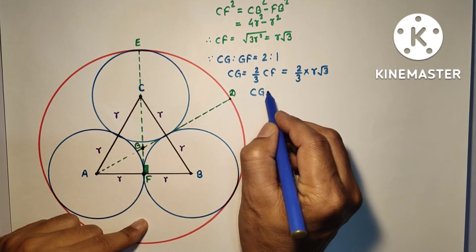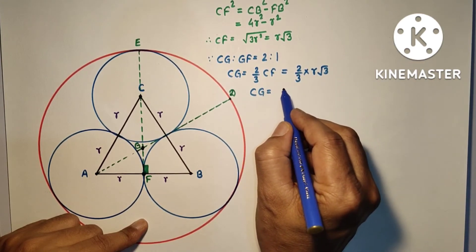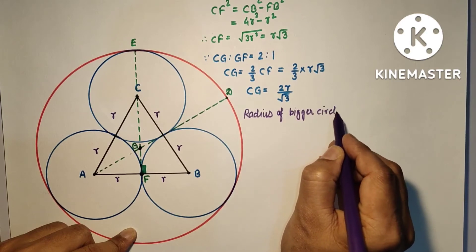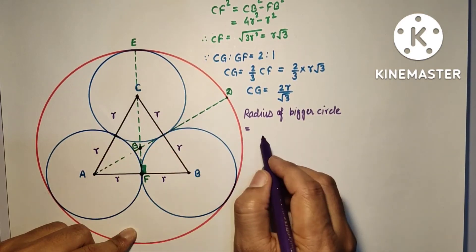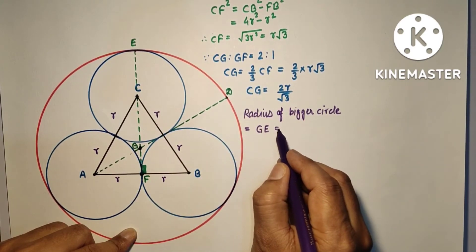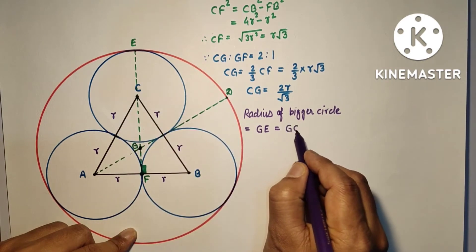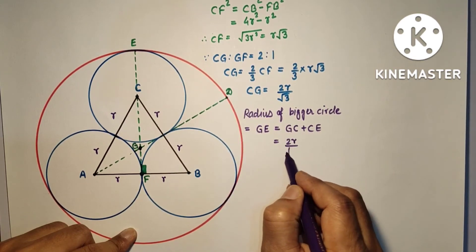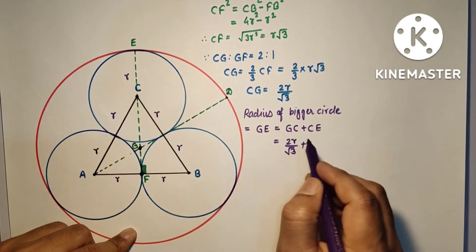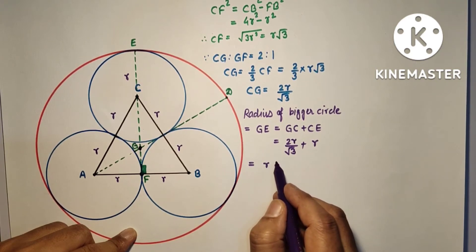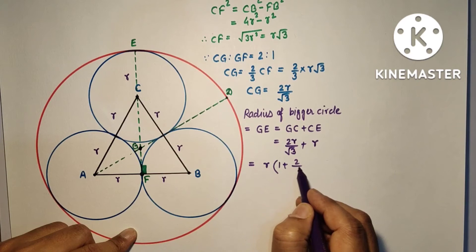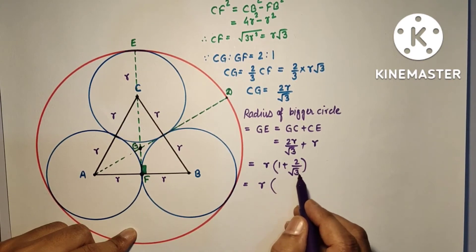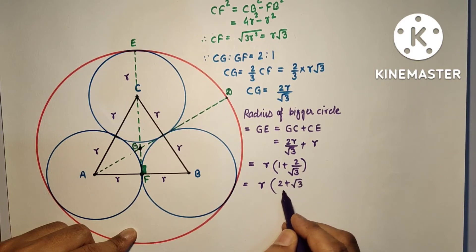Radius of that is equal to GE, which is GD, and that is GC plus CE. GC, which is CG, is 2R/√3, and CE is nothing but R. If we take R common, 1 plus 2/√3, that means R(√3 + 2)/√3, or we can say (2 + √3)/√3.